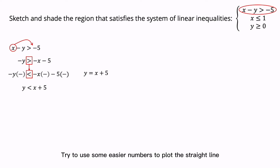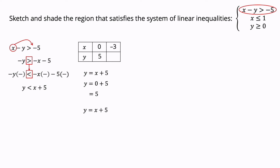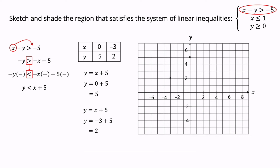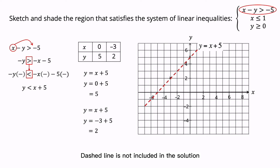Use easy numbers to plot the straight line. Draw a table and label with X and Y. Put X equals to 0 into the equation: Y equals to 5. Try X equals to minus 3: substitute minus 3 into X of the equation, minus 3 plus 5, Y equals to 2. Plot the point (0, 5) and the point (minus 3, 2). Join them with a dashed line, since the inequality sign is less than — a dashed line is not included in the solution. Shade the unsatisfied region above the straight line.